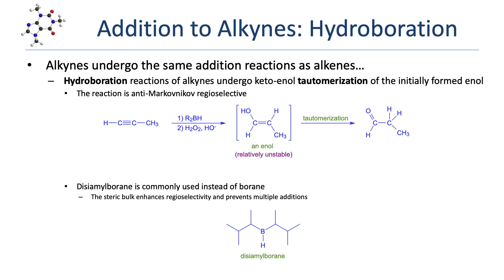Alkynes can also undergo hydroboration oxidation. Remember that hydroboration oxidation is anti-Markovnikov regioselective, placing the oxygen on the less substituted carbon of the pi bond. As with the acid-catalyzed hydration of an alkyne, the initially formed enol intermediate is unstable and tautomerizes rapidly into a carbonyl. The hydroboration oxidation of alkynes often uses a substituted borane rather than borane itself. Disiamyl borane is a frequently used dialkyl borane; its two large branched alkyl groups enhance the anti-Markovnikov regioselectivity and help prevent multiple additions of borane across both carbon-carbon pi bonds of the alkyne.